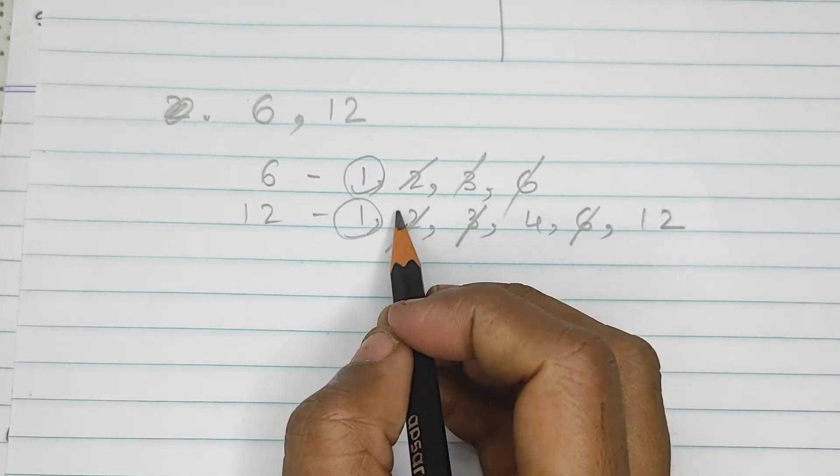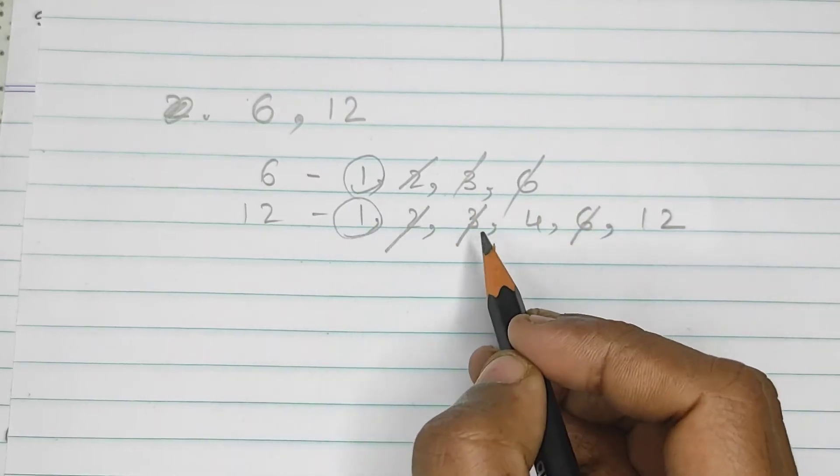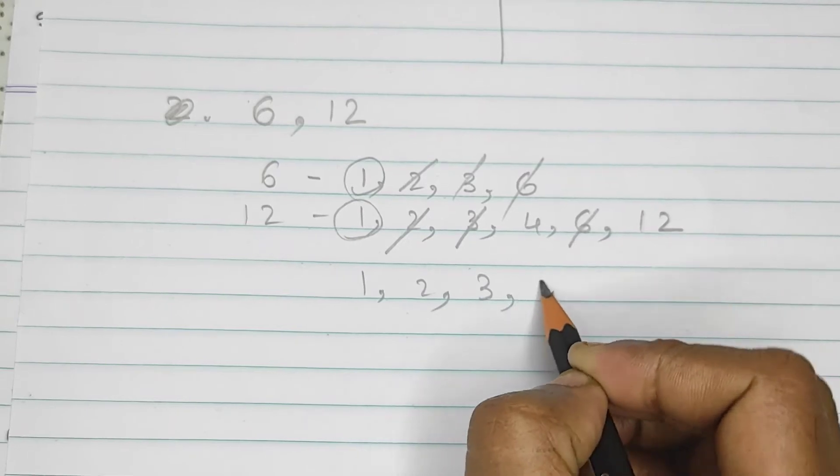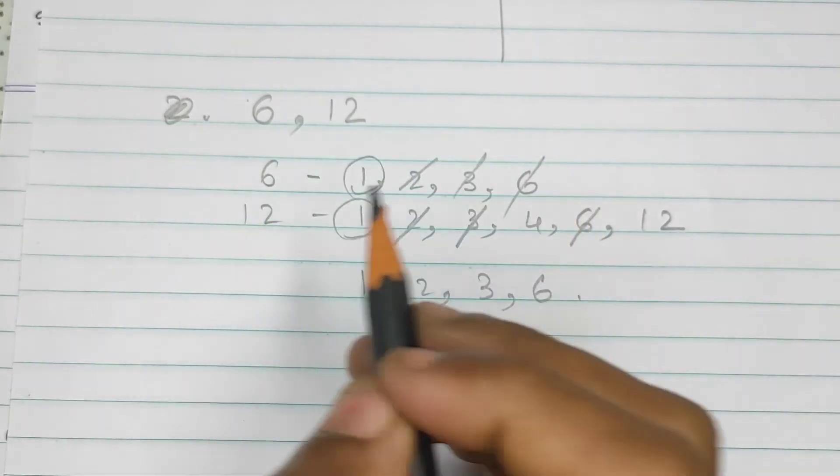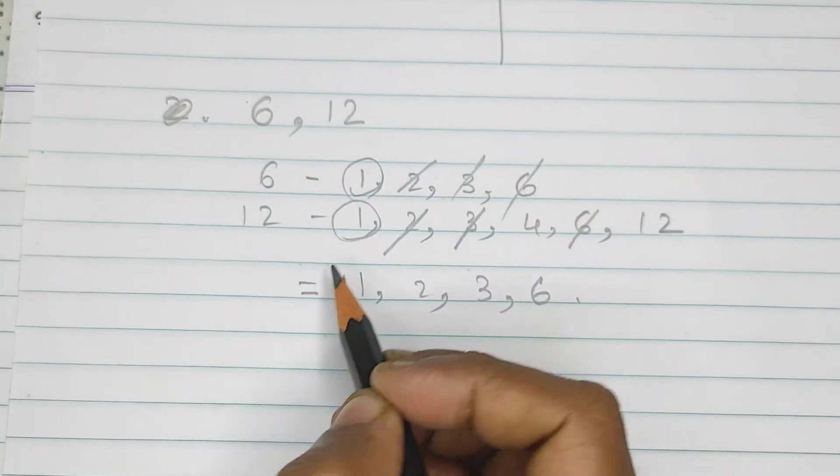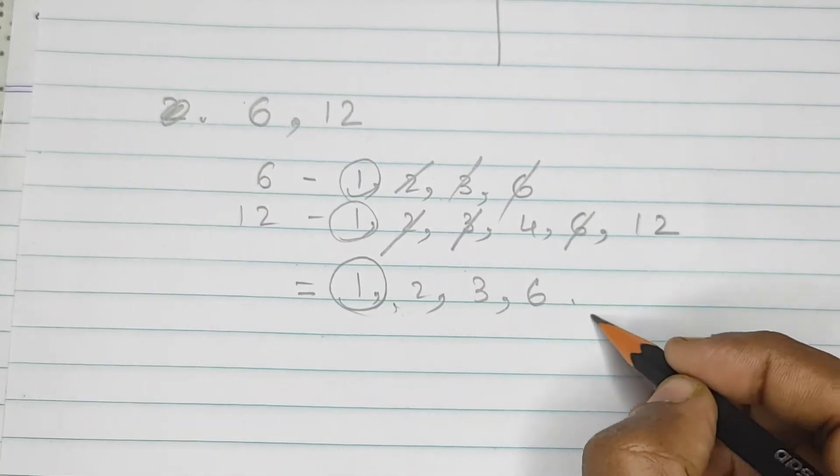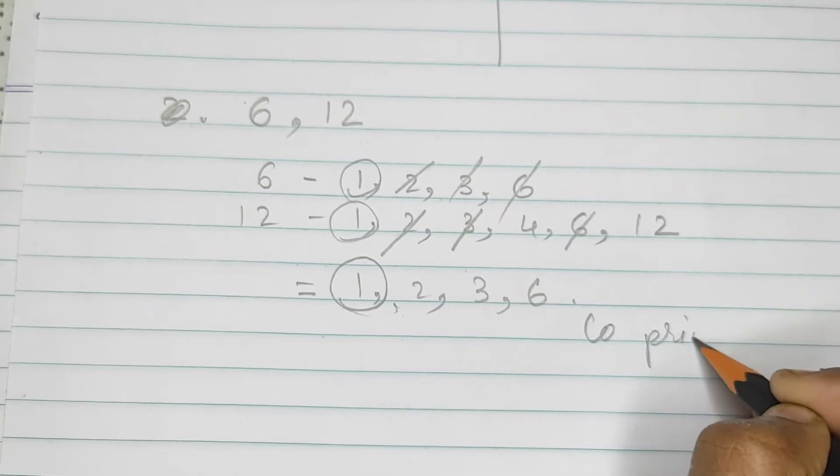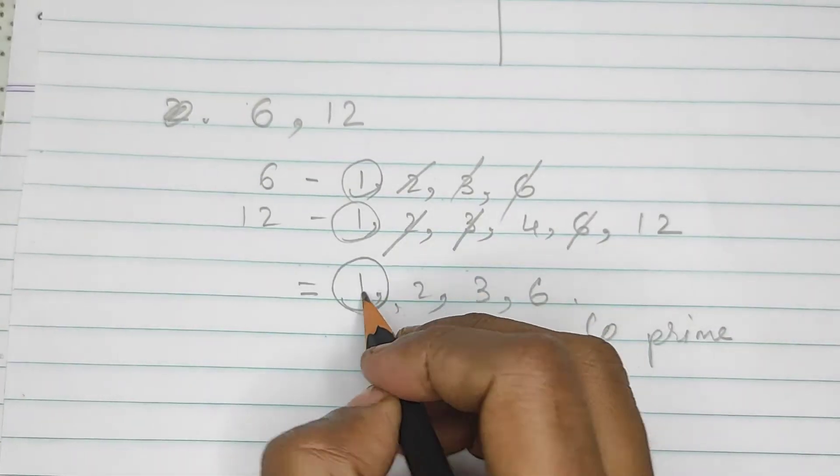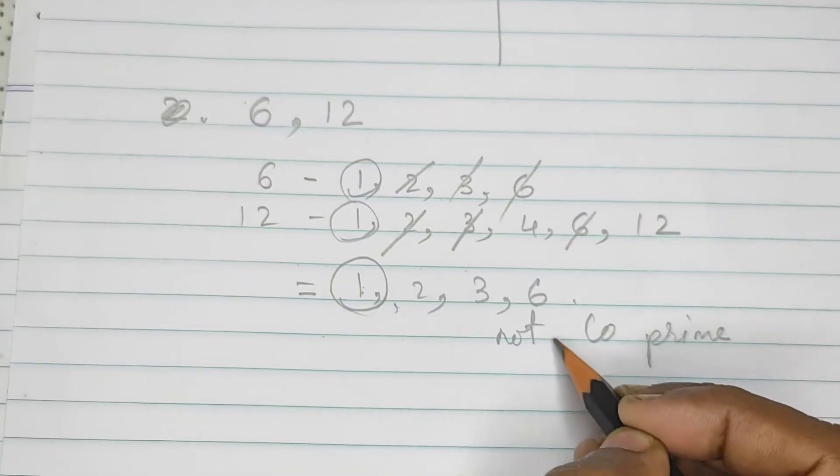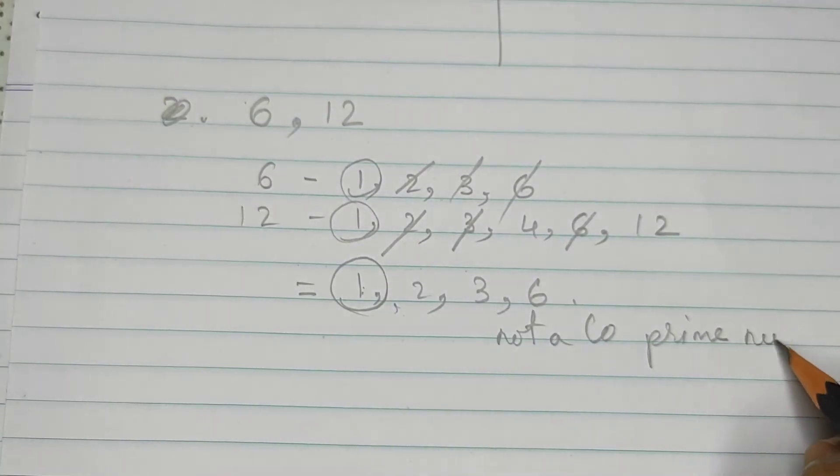So, here along with 1, we have more common factors that is 2, 3 and 6. So, whenever we get other numbers rather than 1, it is not a co-prime number. Matlab, co-prime means we need only 1. So, this is not a co-prime number.